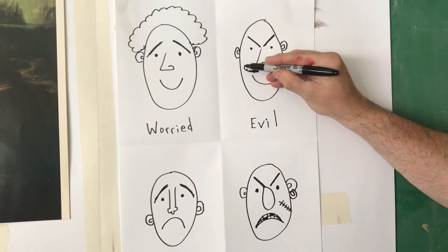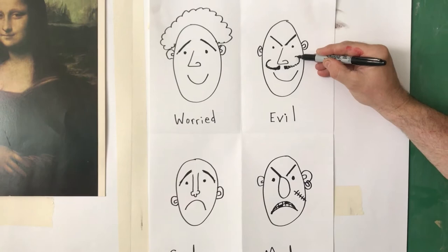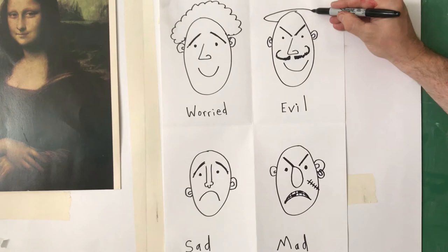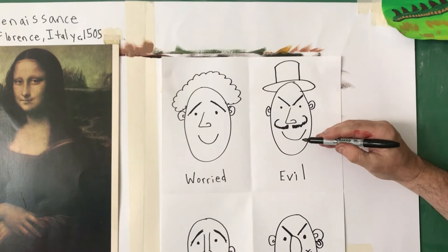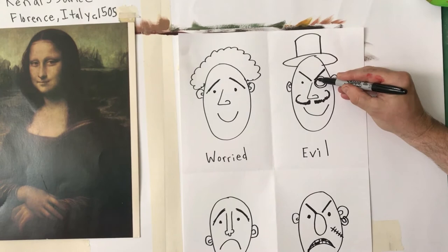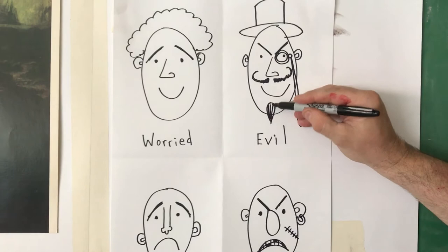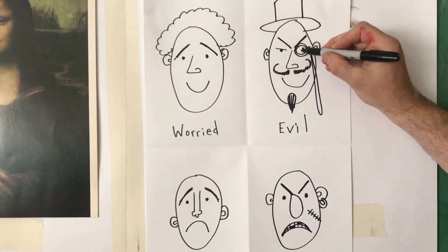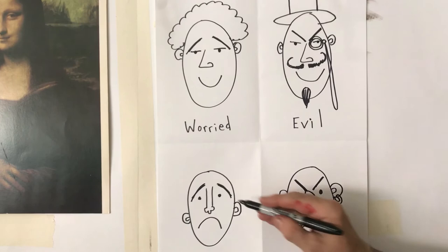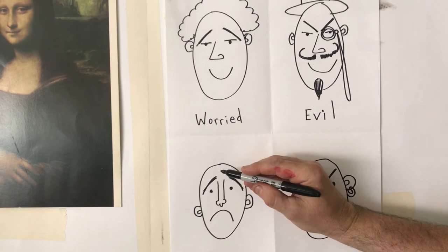For the evil guy, what would evil hair look like? Let's give him one of those old-fashioned villain mustaches and a top hat — an oval with a cylinder. To really nail the evil look, I'm giving him a monocle — that's the old-fashioned single eyeglass with a little rope — and a little pointy beard. Pure evil. I'll finish his eyes with a narrow line.